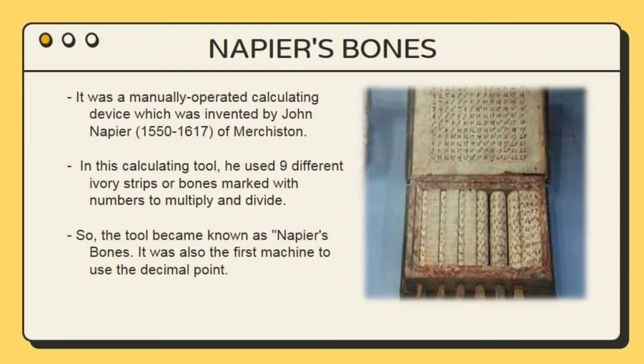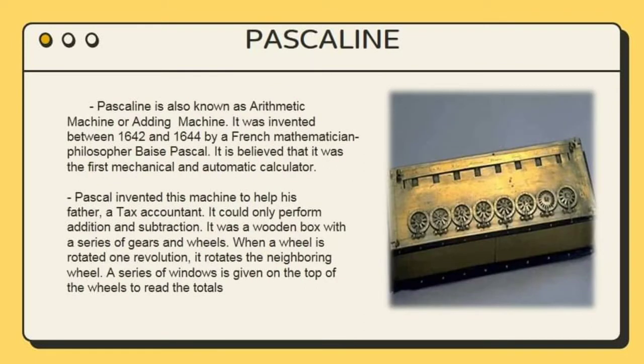Next is Napier's Bones. It was a manually operated calculating device which was invented by John Napier. In this calculating tool, he used nine different ivory strips or bones marked with numbers to multiply and divide. The tool became known as Napier's Bones and it was also the first machine to use the decimal point.